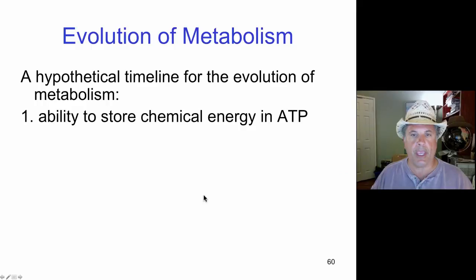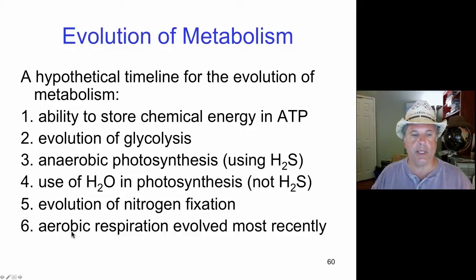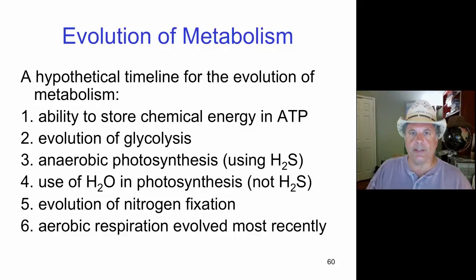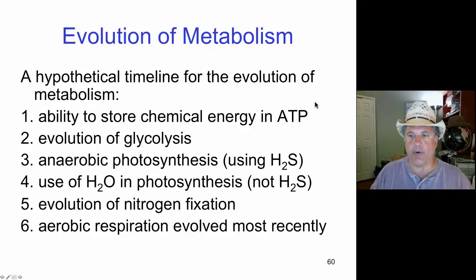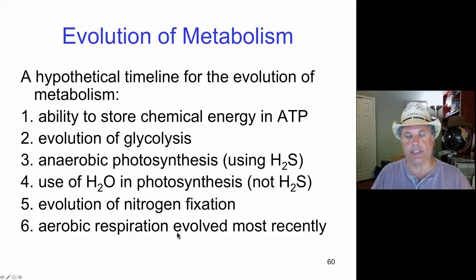Finally we get to the evolution of aerobic respiration. Once oxygenic photosynthetic organisms had produced enough oxygen, there was tremendous selection pressure to use that oxygen productively. Initially oxygen was probably toxic, but those bacteria that evolved to use oxygen as a final electron acceptor in the electron transport chain had a huge advantage, because they produce lots of ATP through aerobic respiration.